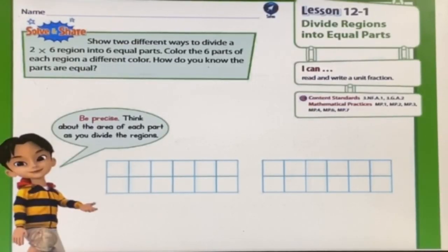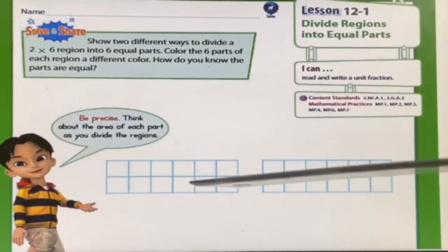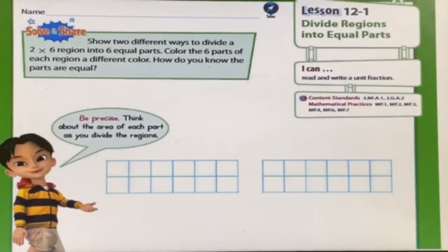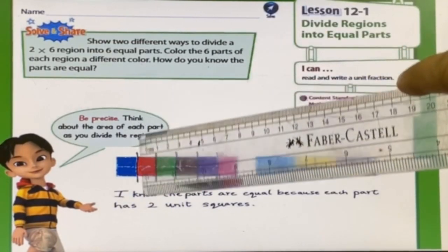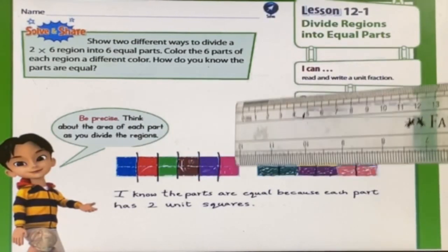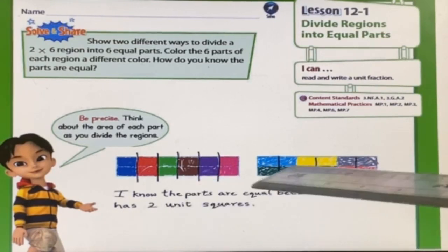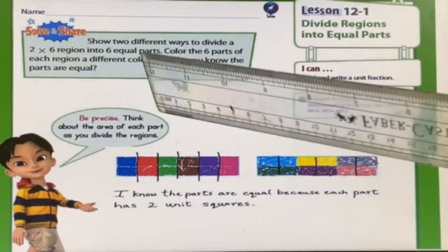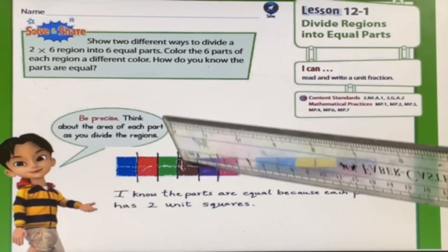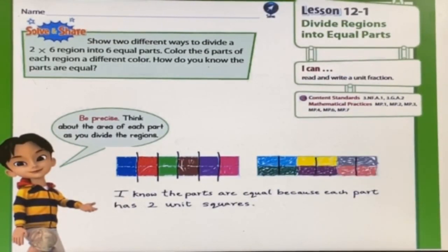Let's begin lesson 12.1. The problem is: show two different ways to divide a two-by-six region into six equal parts, color each part a different color, and explain how you know the parts are equal. I drew lines to divide the regions and colored them with different colors. I know the parts are equal because each part has two unit squares — if the unit squares in each part are the same, the picture is divided into equal parts.